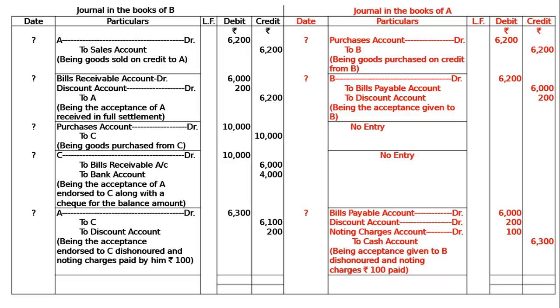Now total the journal for B: totaling will be Rs. 38,700. For C, it will be Rs. 18,700.